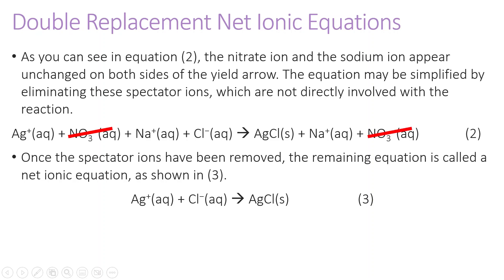Nitrate begins as aqueous and ends as aqueous. Sodium begins as aqueous and ends as aqueous. So once we have removed all of those ions, what we're left with is called the net ionic equation. This shows us just the ions that actually reacted during the course of this reaction.